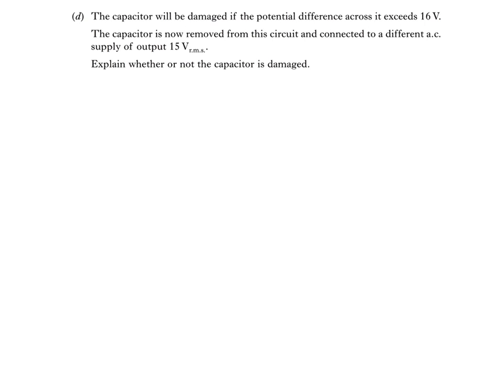So of course, at first glance, it maybe looks like the capacitor won't be damaged because 15 volts is less than the 16 volts that the capacitor can tolerate. But this is actually 15 volts RMS. The RMS voltage is lower than the peak voltage. An AC voltage of 15 volts RMS supplies the same energy as a DC voltage of 15 volts. To calculate the peak voltage, we use this equation.